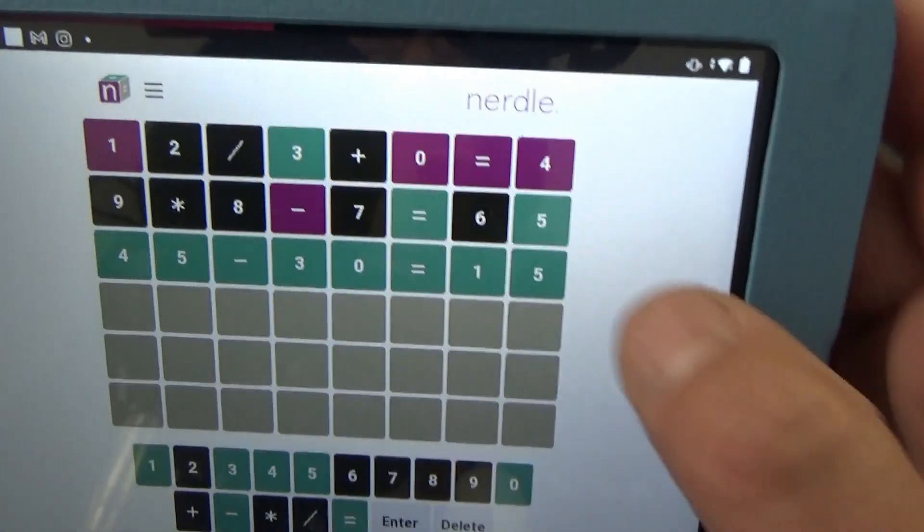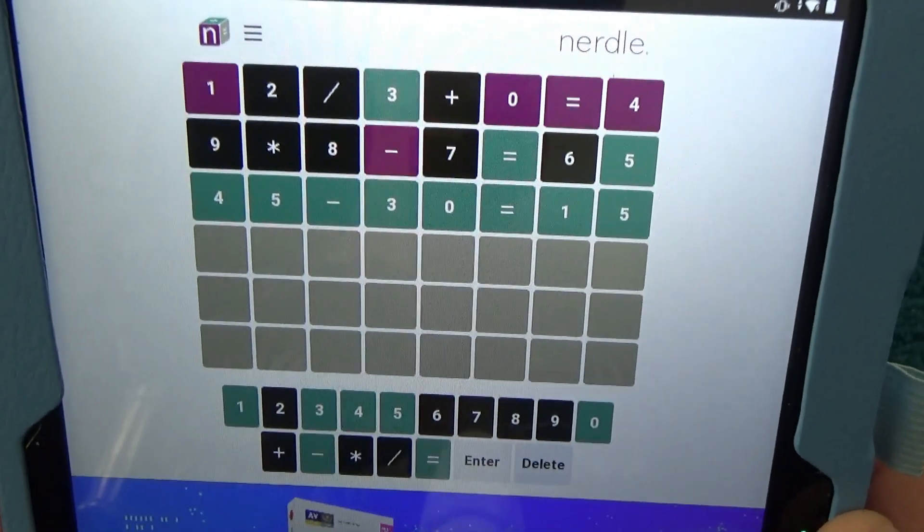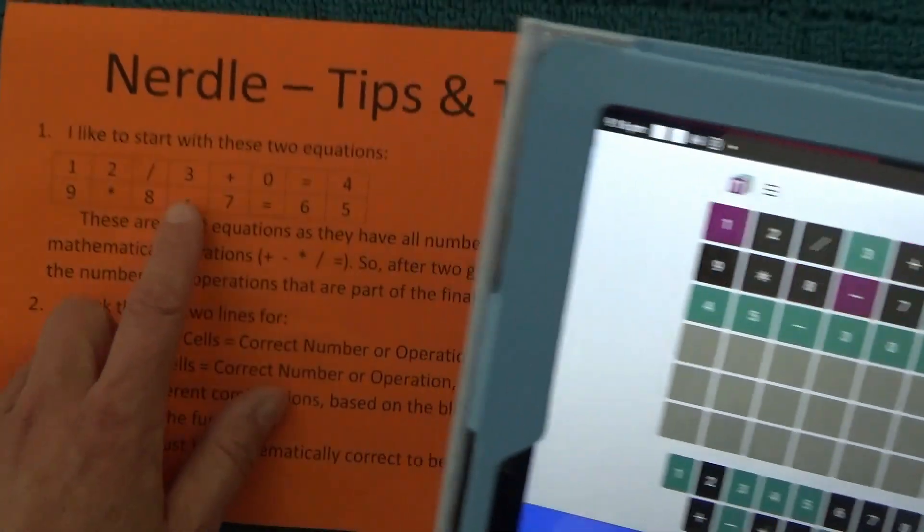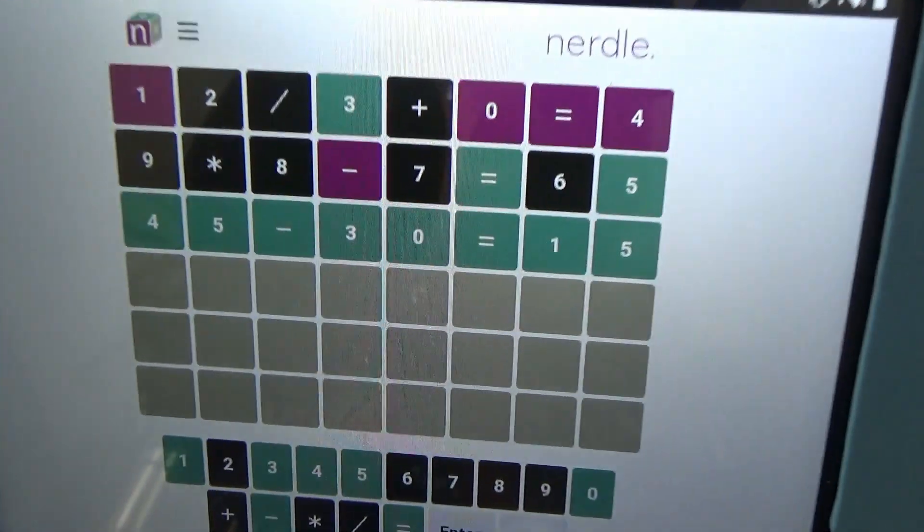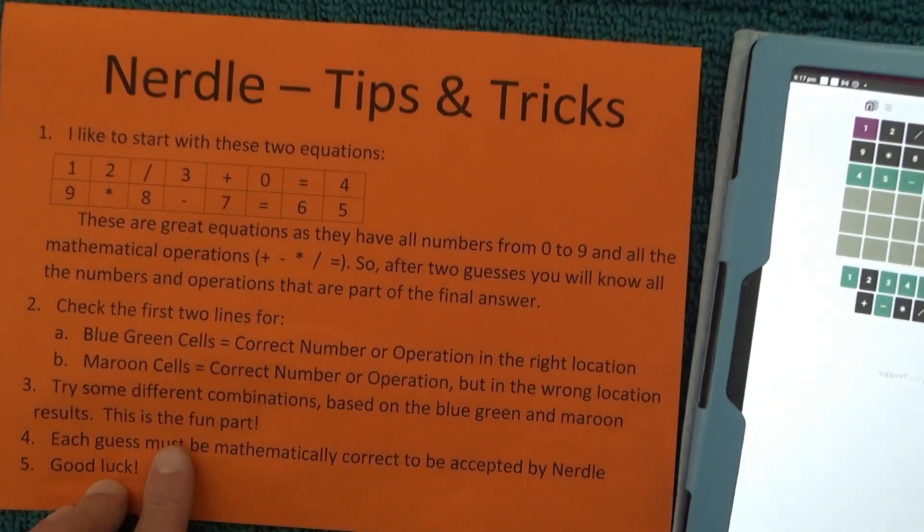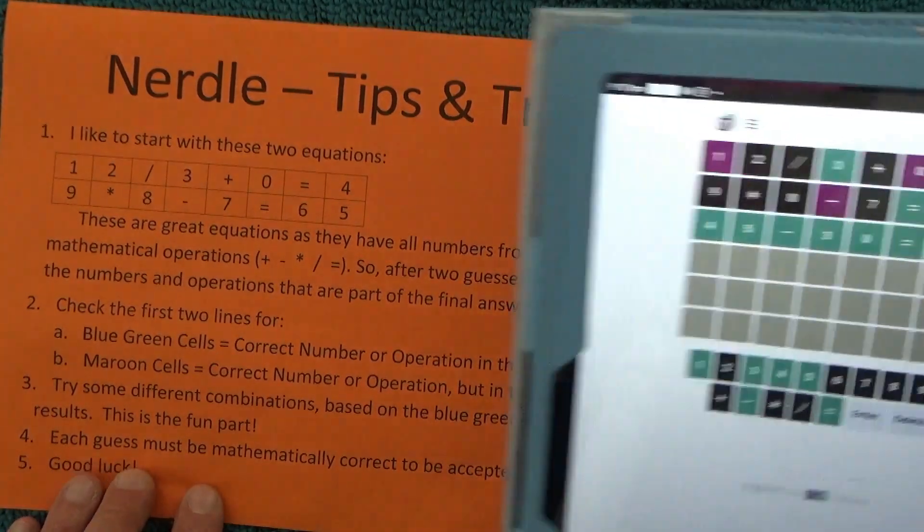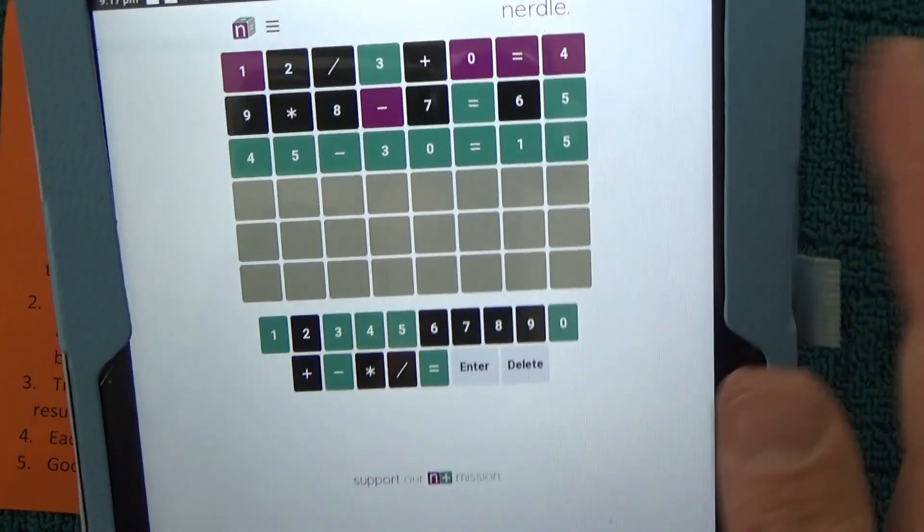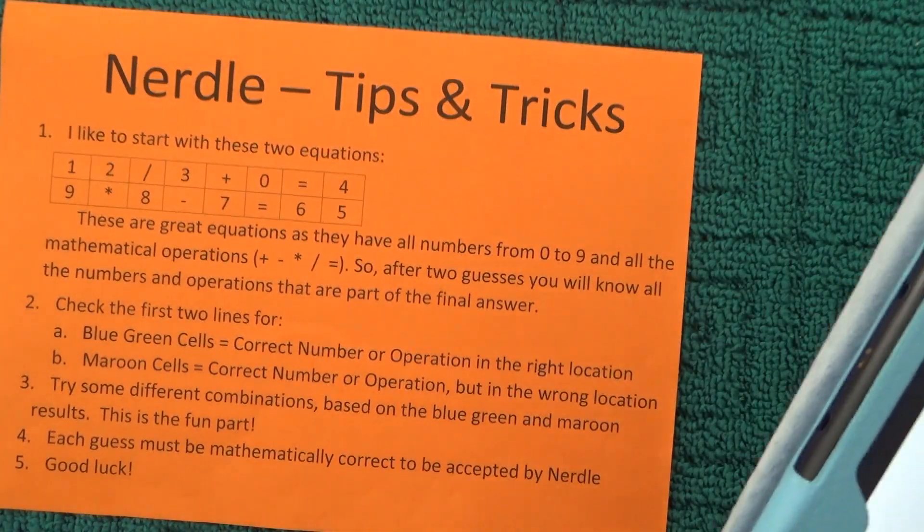Once you get into it, it's very logical where the numbers can and can't be. And obviously those two good starting equations give you some good clues about what the final answer might be. So trying these different combinations is the fun part. Each one of your guesses that you have here actually has to be mathematically correct to be accepted by Nerdle to get it all to work.